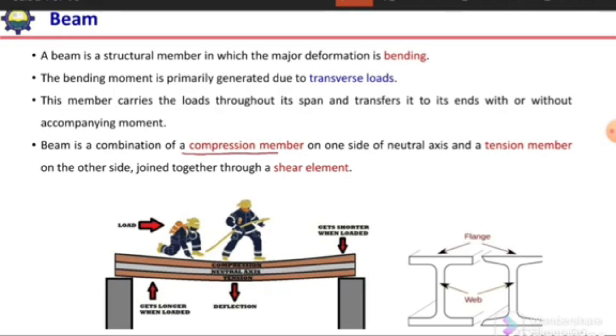A beam is a combination of compression members on one side of the neutral axis and tension member on the other side. So if you see a beam, it will have a compression member on one side of the neutral axis and tension member on the other side of the neutral axis.